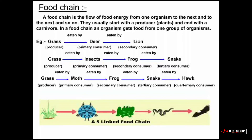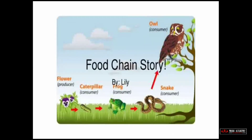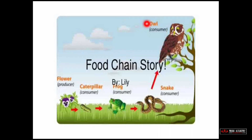Looking at the diagram: grass → moth → frog → snake → hawk. This energy transmission through organisms is why we call it a food chain. Another food chain example shown: flower → caterpillar → frog → snake → owl. This entire chain cycle is called a food chain.